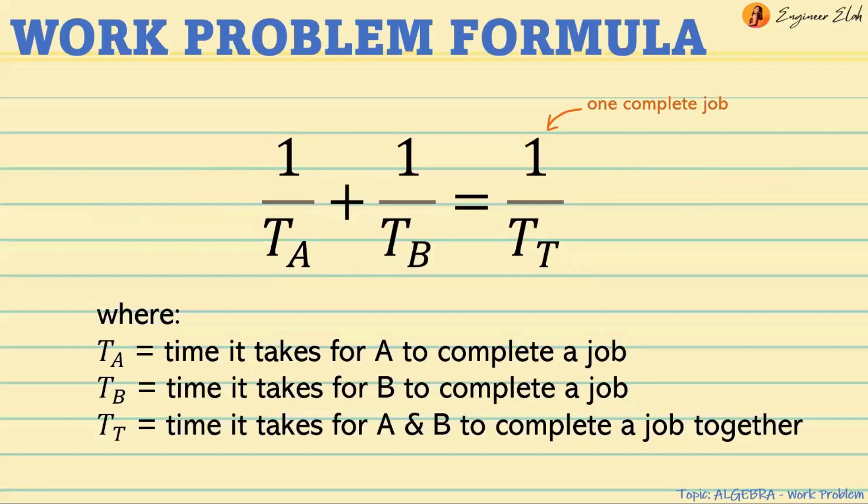So the formula for work problems is this: 1 over Ta plus 1 over Tb equals 1 over Tt, where Ta is the time it takes for A to complete a job, Tb is the time it takes for B to complete a job, and Tt is the time it takes for A and B to complete a job together.